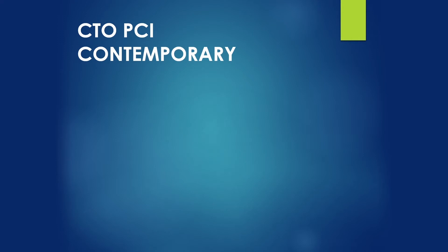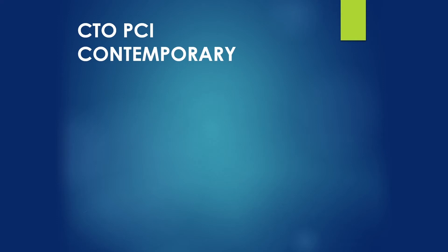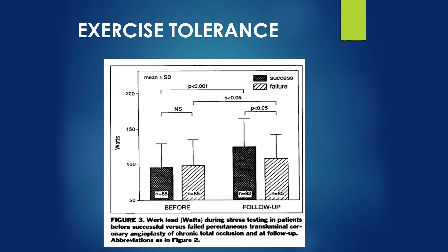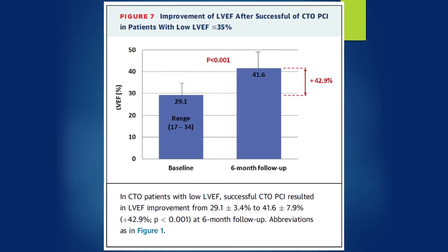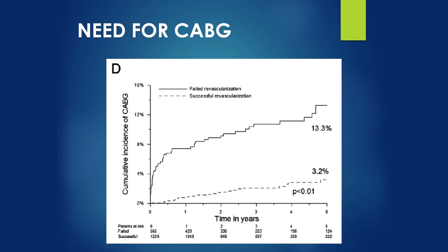Contemporary PCI literature gives us better insight into the practice of CTO PCI. A number of studies have shown significant improvement in angina management with CTO PCI compared to medical therapy. We also know that exercise tolerance can improve with CTO PCI. LV function and LV hemodynamics may improve with CTO PCI as well. LV function improved after successful CTO PCI in patients with low LV ejection fraction less than 35%. Needs for future CABG can be significantly reduced with CTO PCI.